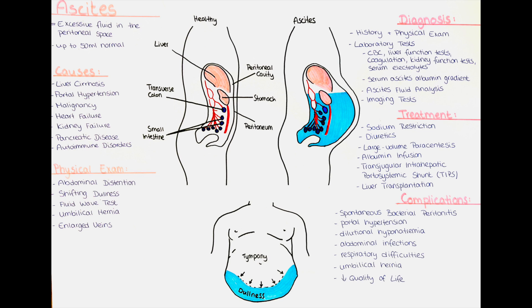Ascites can be caused by many different conditions. Cirrhosis is the most common cause of ascites. It is a late stage liver disease characterized by irreversible scarring of the liver tissue. Cirrhosis can result from various conditions such as chronic viral hepatitis, alcoholic liver disease, non-alcoholic fatty liver disease, autoimmune hepatitis, and others.